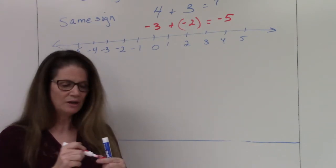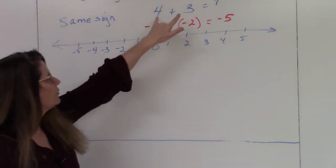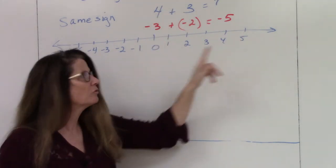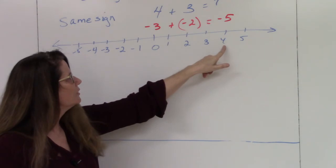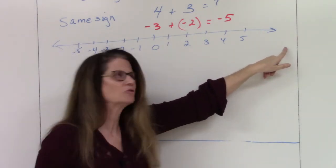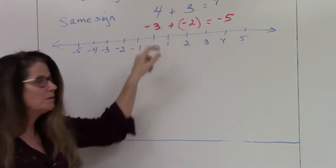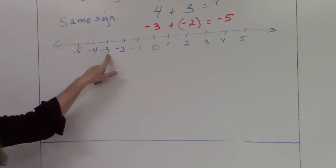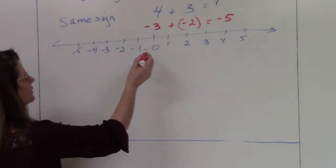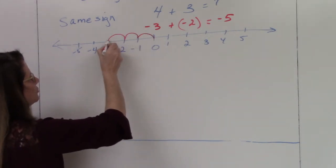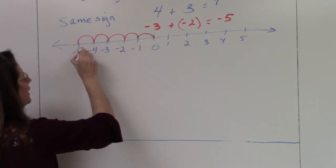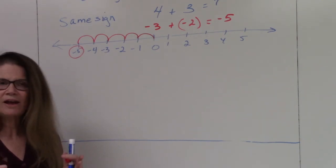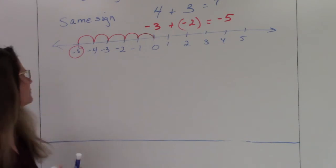With math, rules are what throw people when they don't understand why they work. When you're earning money — adding positives — you're staying in the positive realm, going from zero up to four and then three more steps in the positive direction. When adding negatives of the same sign, you start at zero, go to negative three, move two more steps left, and end up at negative five. So adding same-sign numbers: add the two values and give the answer that same sign.